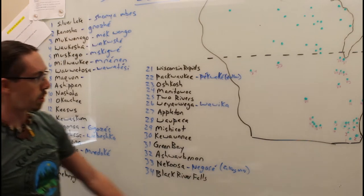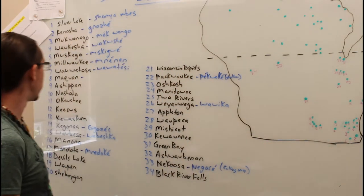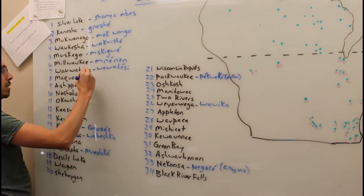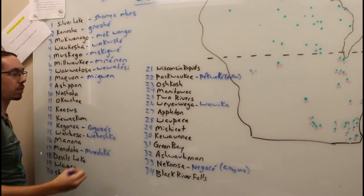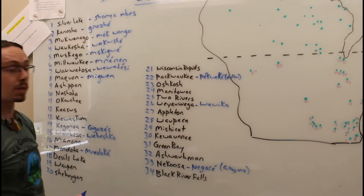If you work your way up a little bit north of Milwaukee, you'll run into Mequon, Wisconsin. And that is Meegwin. Meegwin is a feather.